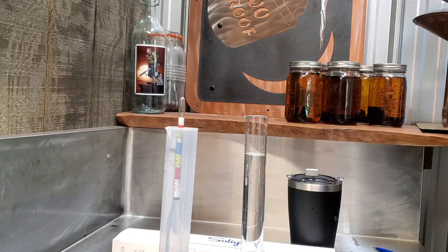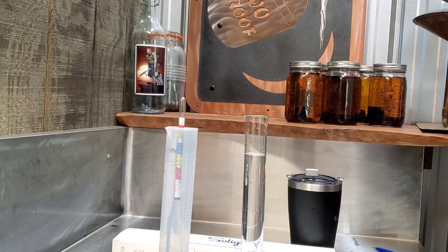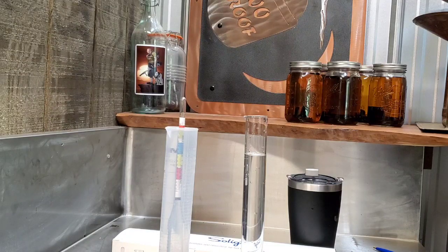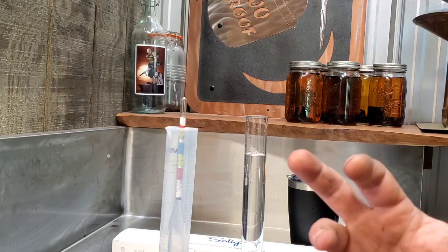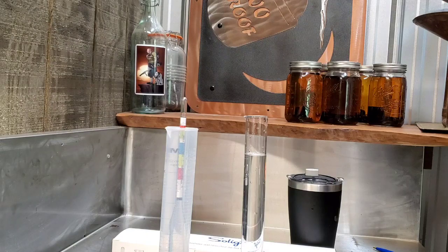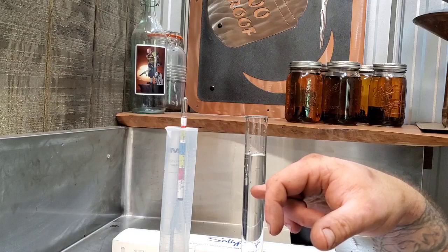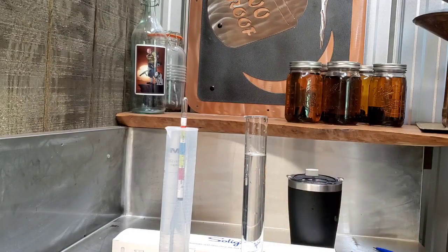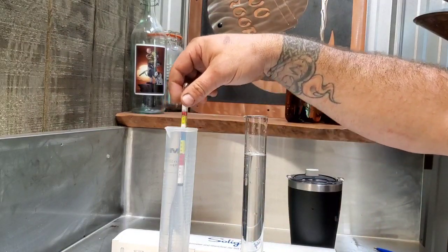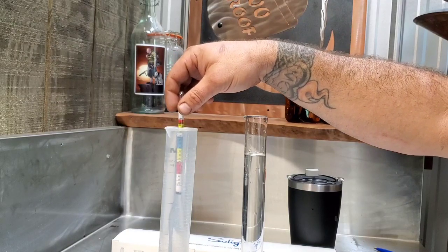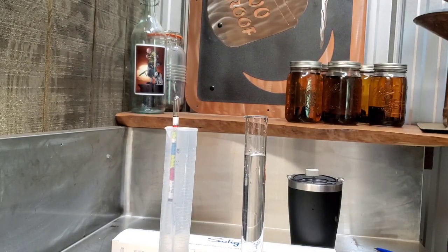So go to Google, type in specific gravity to temperature correction. You're going to come up with five or six different calculators and they're all going to say, what is your starting SG from your hydrometer? What is your temperature?